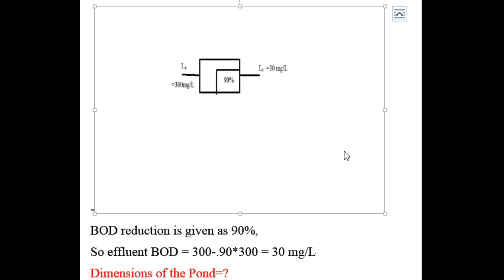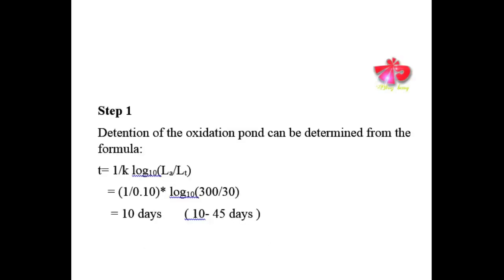We need to find the dimensions of the pond: length, breadth, and overall depth. In Step 1, we determine the detention time. The formula is: t = (1/k) × log base 10 of (La/Lt), where k is the deoxygenation constant and La and Lt are influent and effluent BOD respectively.